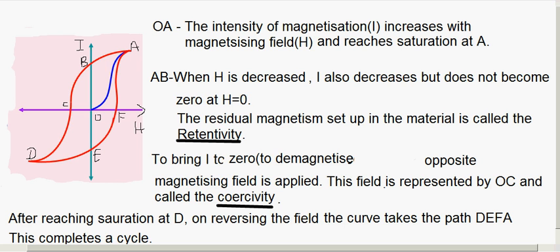Hysteresis means this lagging behind. The hysteresis loop is very important in selecting material for electromagnets and permanent magnets, depending on how much area is under the loop. For a permanent magnet, the material should have high retentivity, high coercivity, and high permeability. For an electromagnet, the material should have low retentivity, because electromagnets are not permanent — we don't want to retain residual magnetism after H becomes 0.